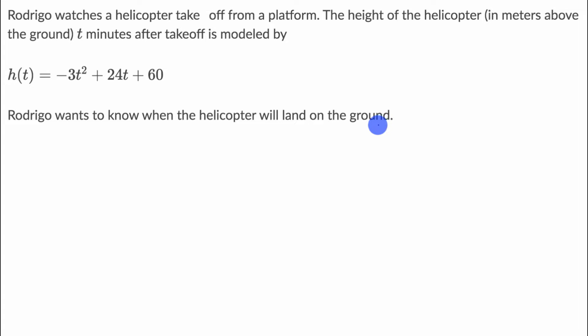So pause this video and see if you can figure that out. All right, now let's think about this together. Let's imagine what the graph of this function looks like. And it'll also help us imagine what's going on with the helicopter. So our horizontal axis, this is t, time in minutes. And then our vertical axis is height. So height as a function of time. I'll just write height. And this is given in meters above the ground.